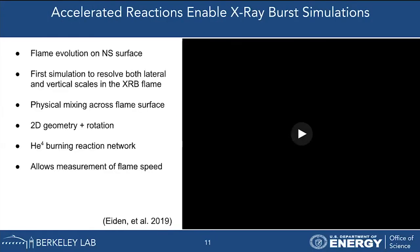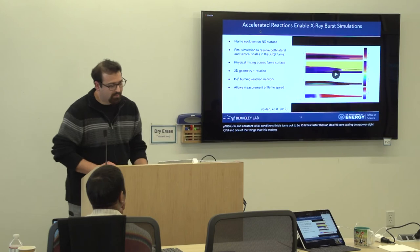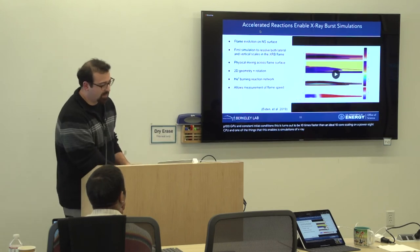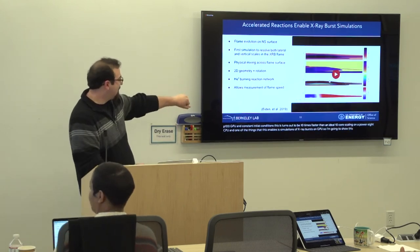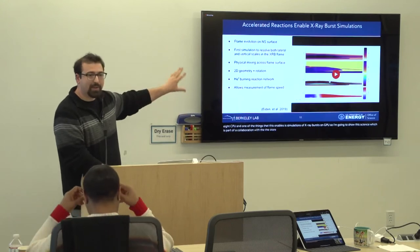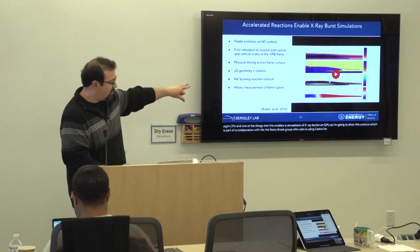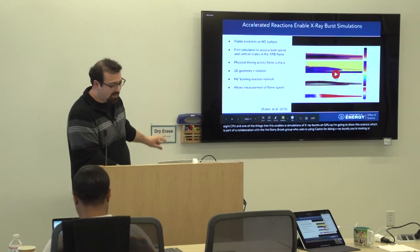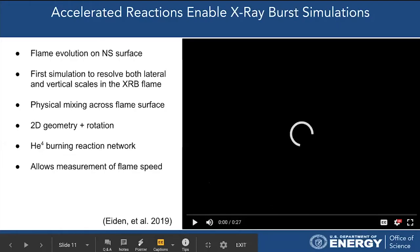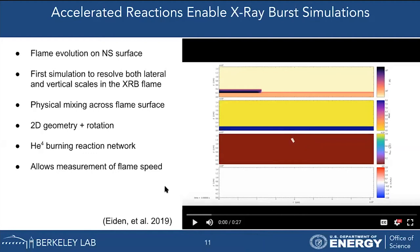I'm going to show this science, which is part of a collaboration with the Stony Brook group who is using Castro for doing x-ray bursts. You're looking at flame evolution on the surface of a neutron star that's burning helium on the neutron star surface all the way up to nickel-56. This is in 2D axisymmetry and uses the same very stiff network I showed you.